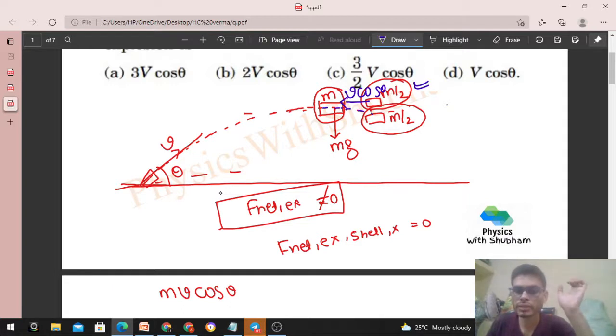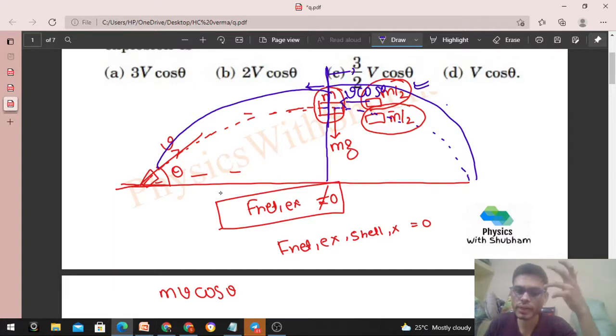If we complete the projectile path, then it will be like this. Now I am going to say that it retraces its path. This is symmetric. Highest point, meaning this line, this is symmetric. If V cos theta is on the way, then it follows this path. If V cos theta is on the way, then it follows this path.